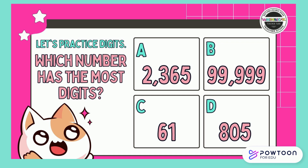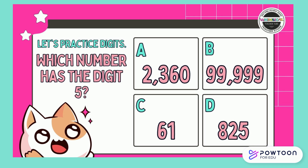Which number has the most digits? Think, then respond. That's correct — answer choice D has the most digits. Which number has the digit 5? Think, then respond. That's right — answer choice D has the digit 5.